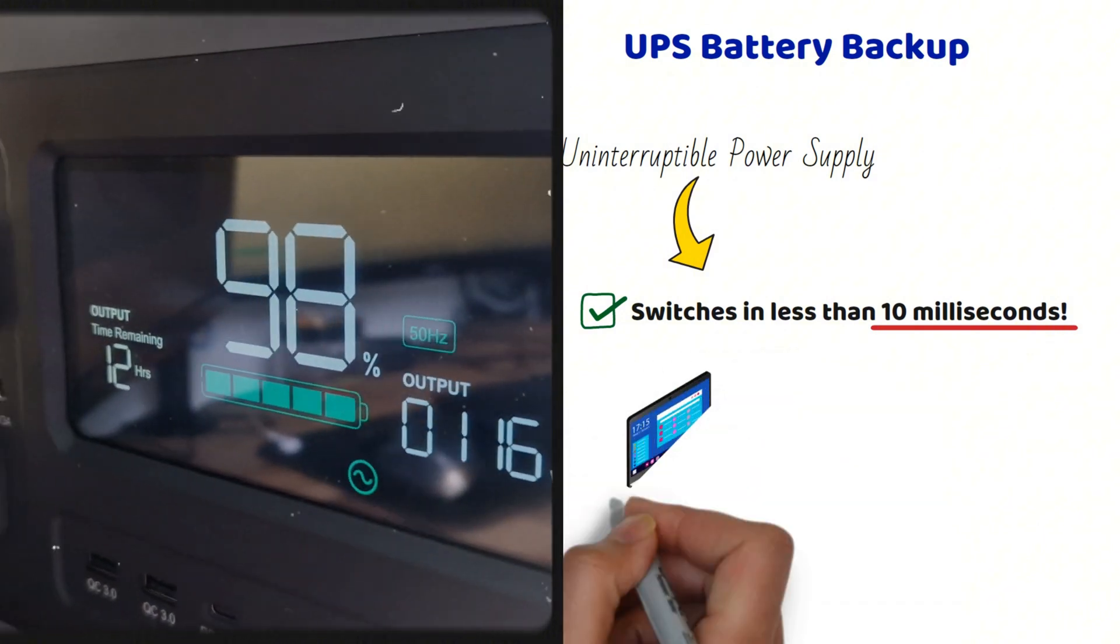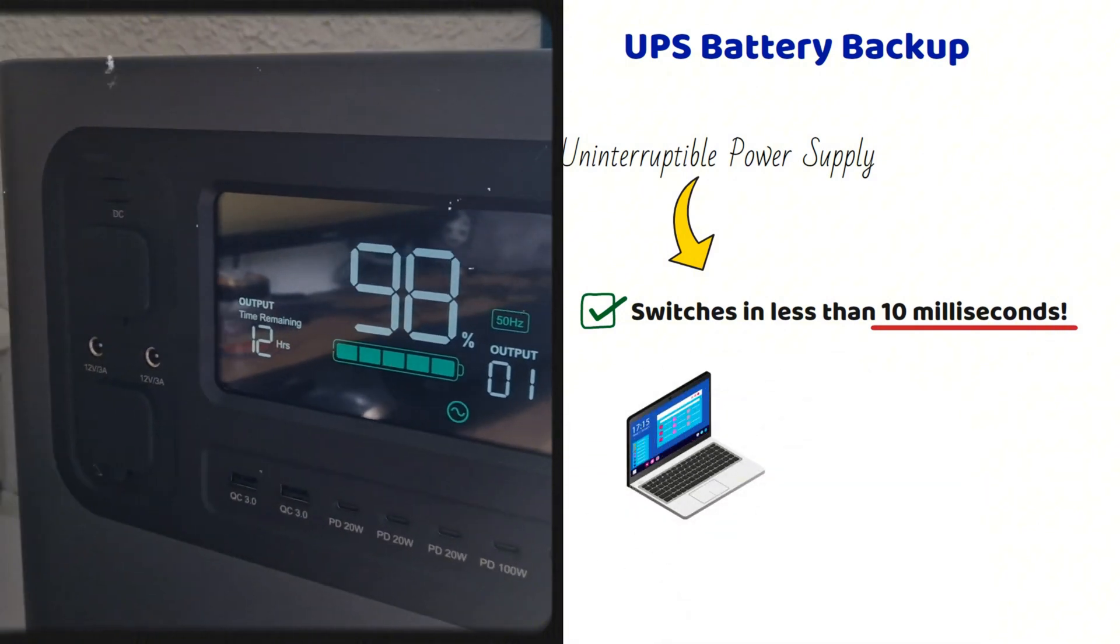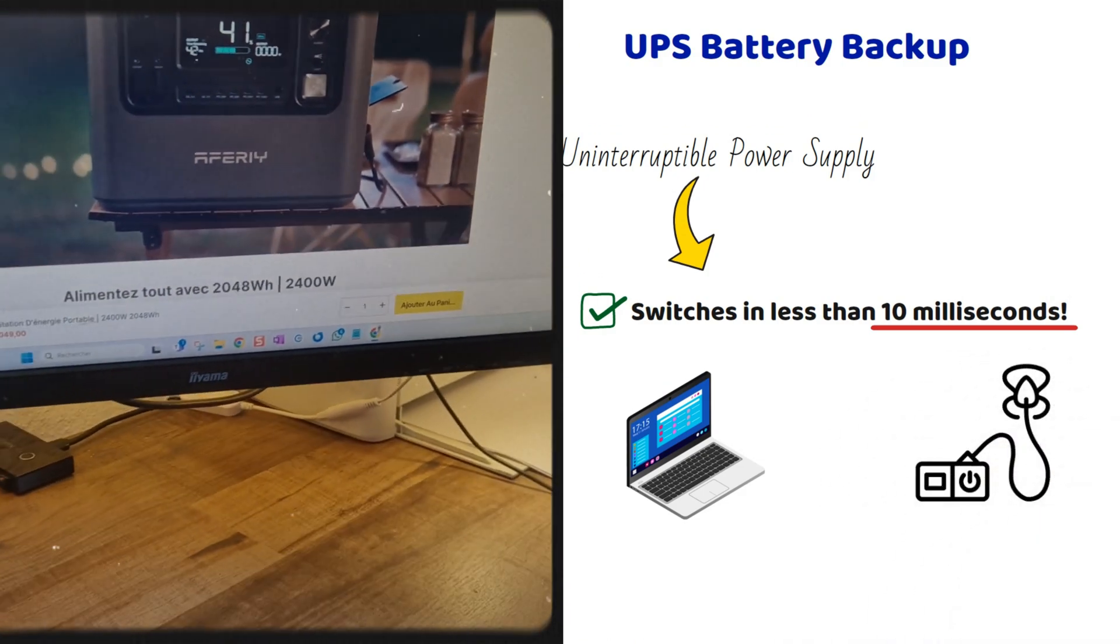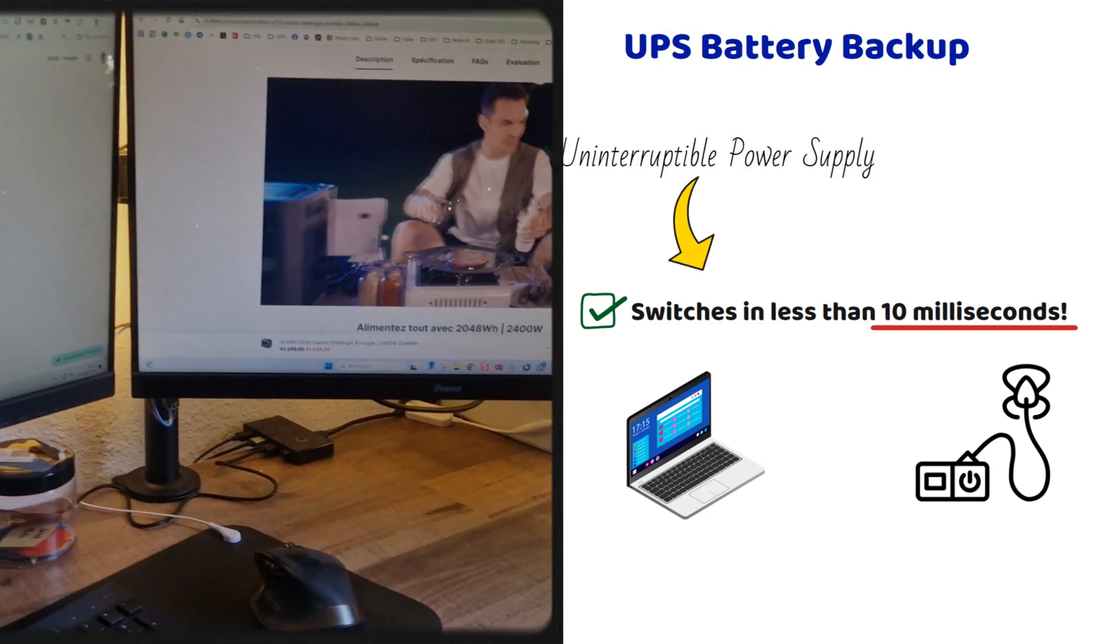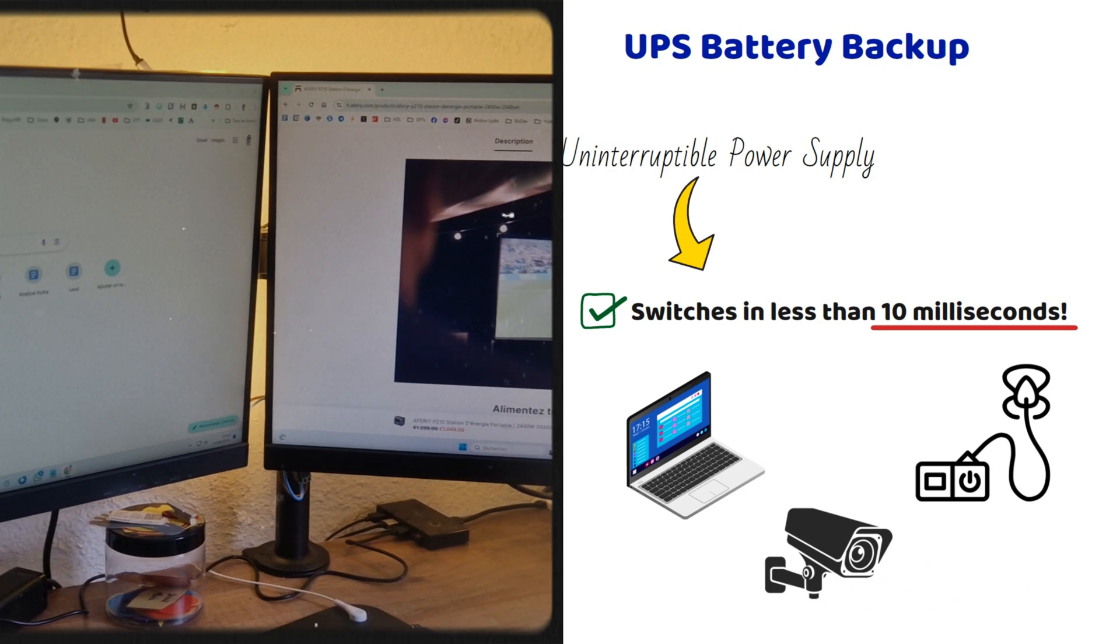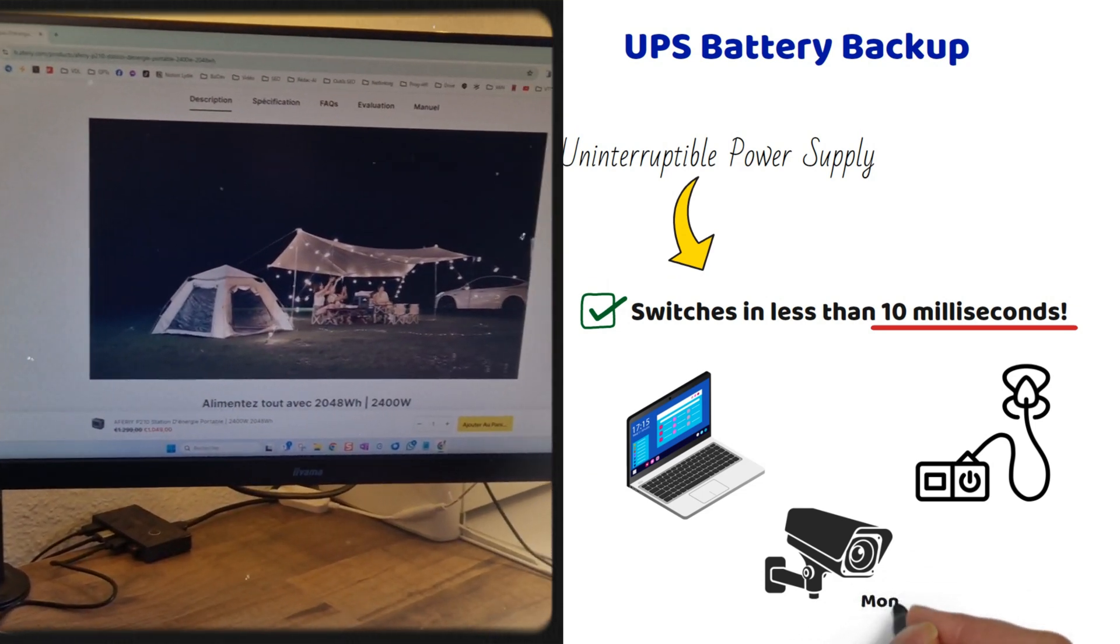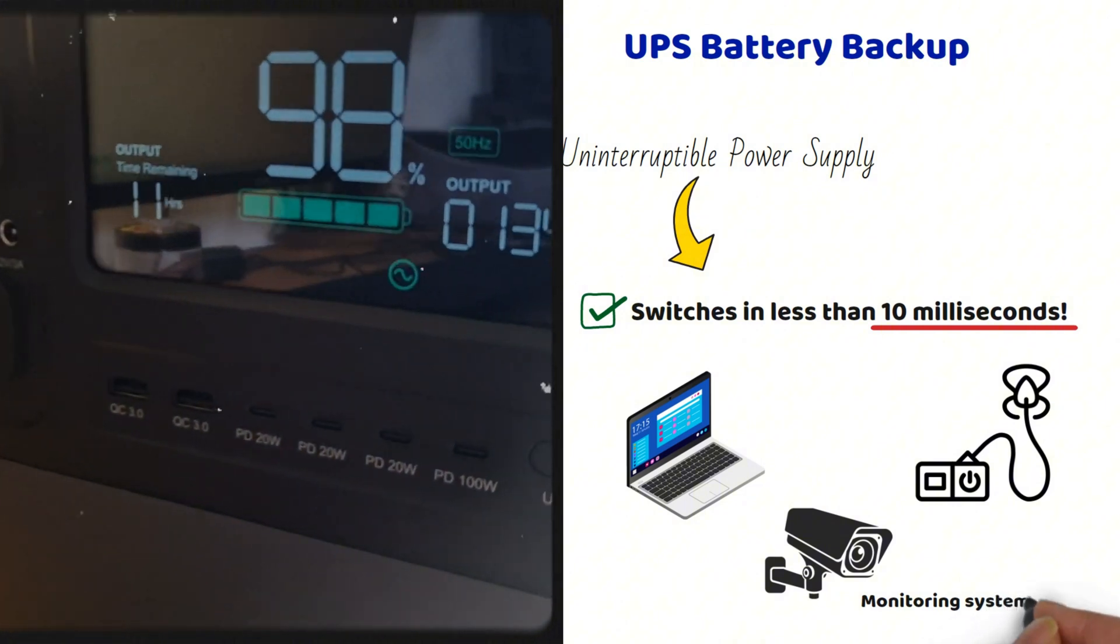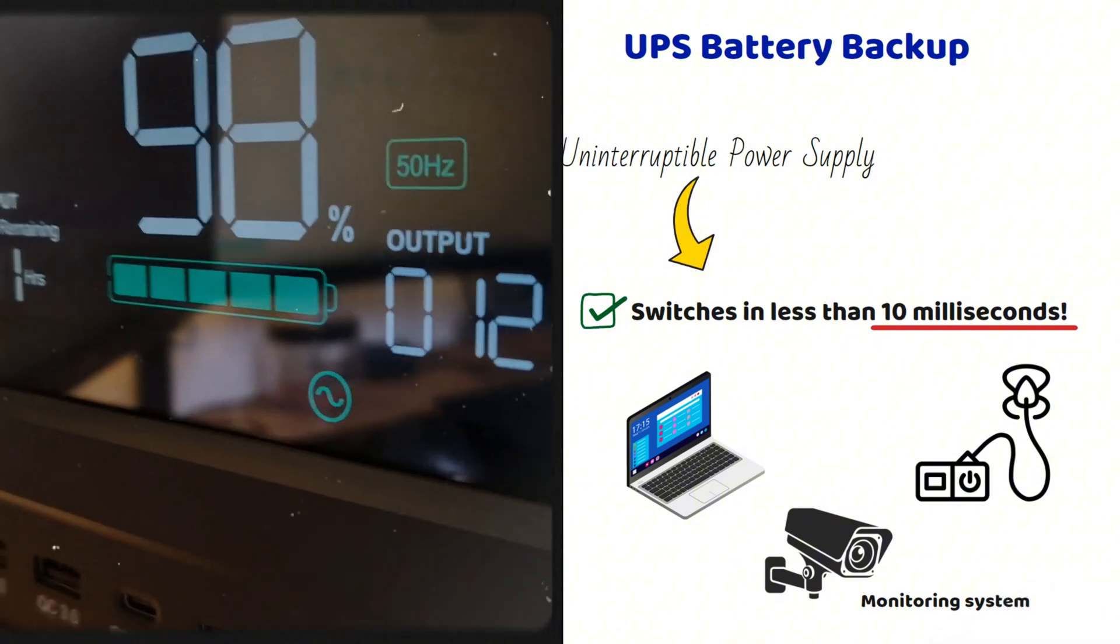This feature has some very interesting uses, not necessarily just for van life, but for other situations as well. Protecting sensitive devices, it prevents interruptions for critical systems like computers, sleep therapy devices, or medical equipment that require constant power. For a surveillance system, imagine a security camera setup that automatically switches from wall power to battery in case of a blackout, without needing any manual intervention.